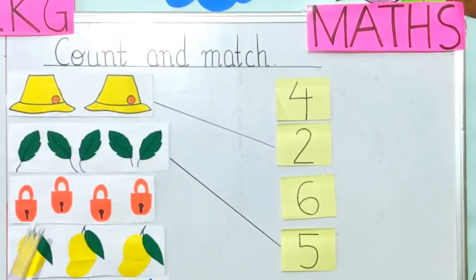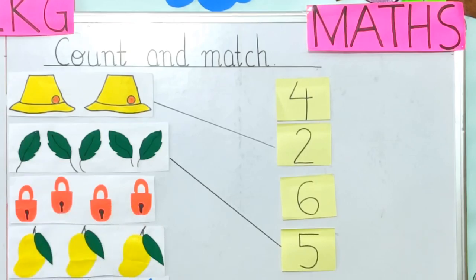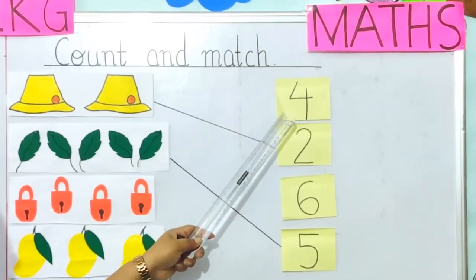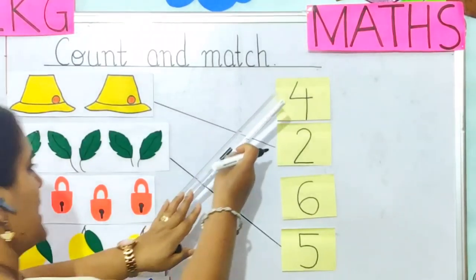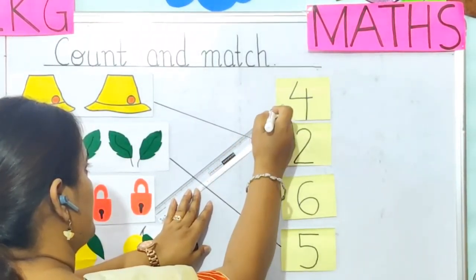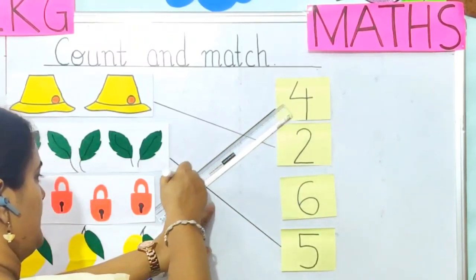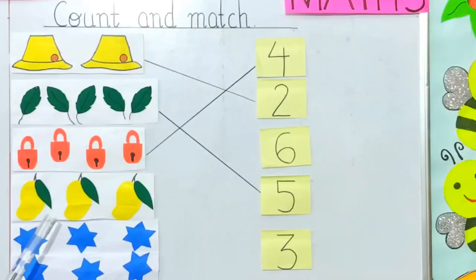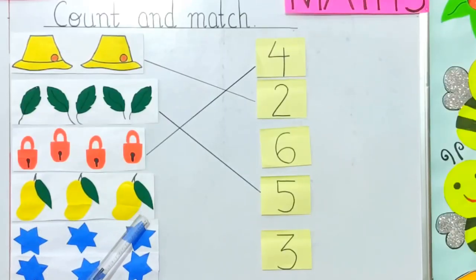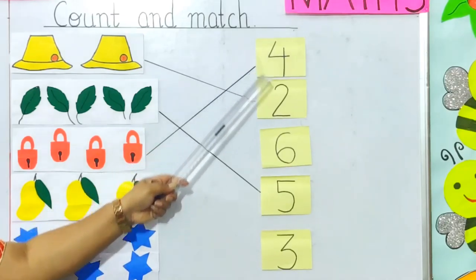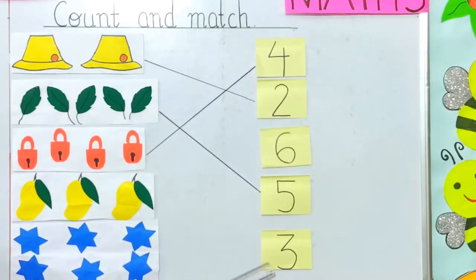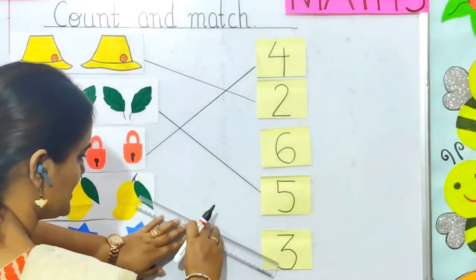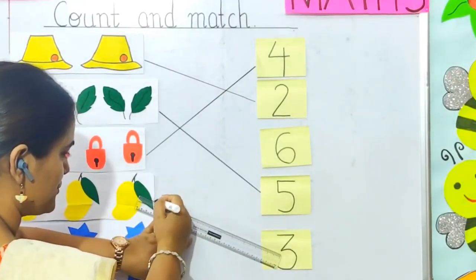Now, how many mangoes are there? Let's count: 1, 2, 3 mangoes. So now, where is the number 3 written? Here. So let's match these mangoes with the number 3.